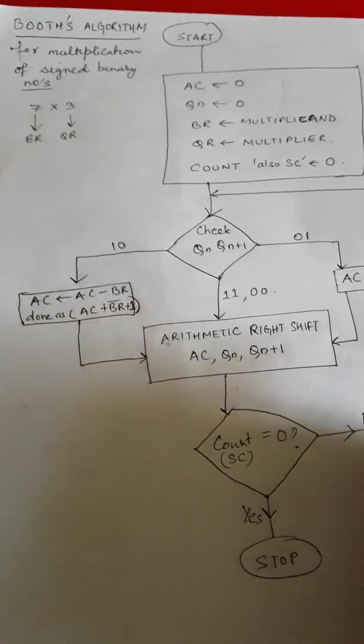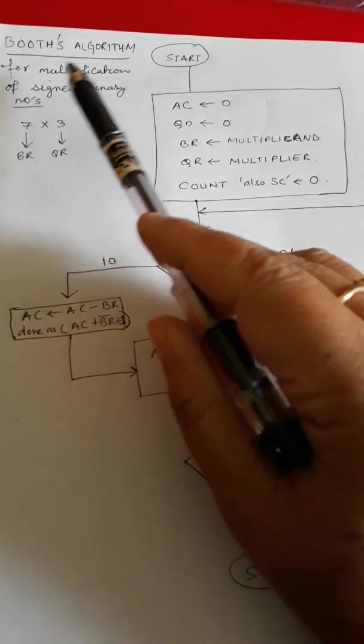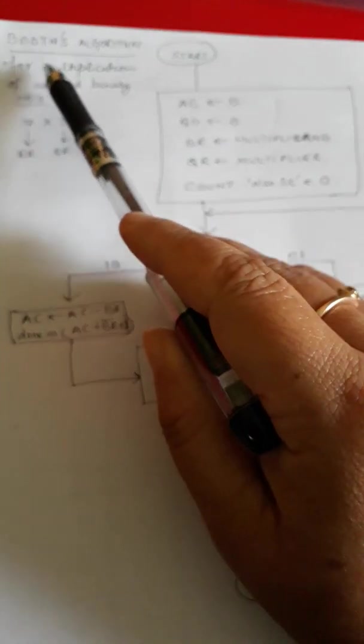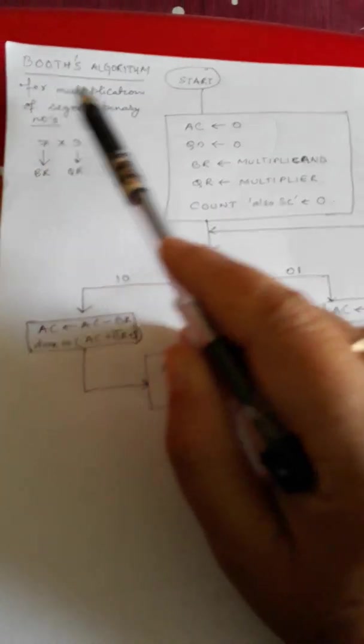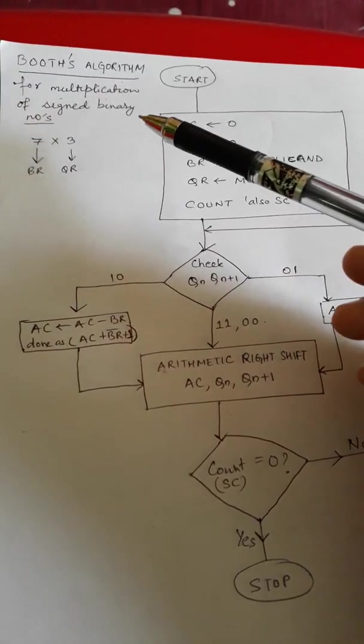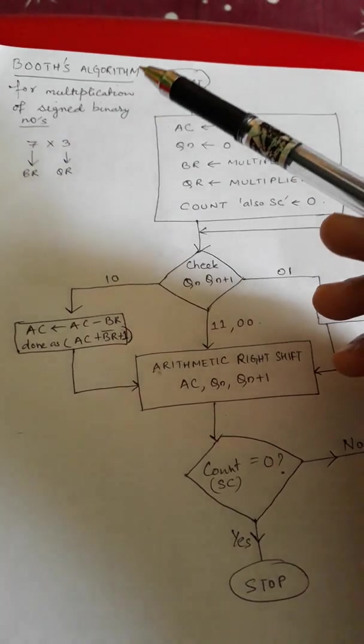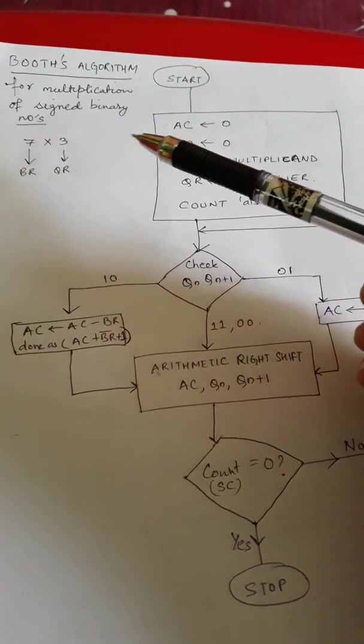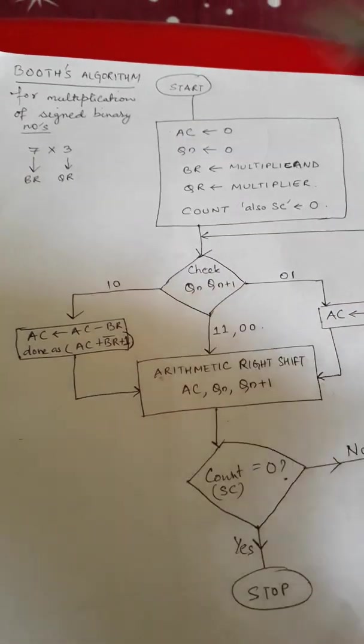Hello all, today I'm going to explain this algorithm which is very important - Booth's algorithm. This algorithm is used for multiplication of signed binary numbers. You have two binary numbers, and with the help of this algorithm we can multiply and find the product.